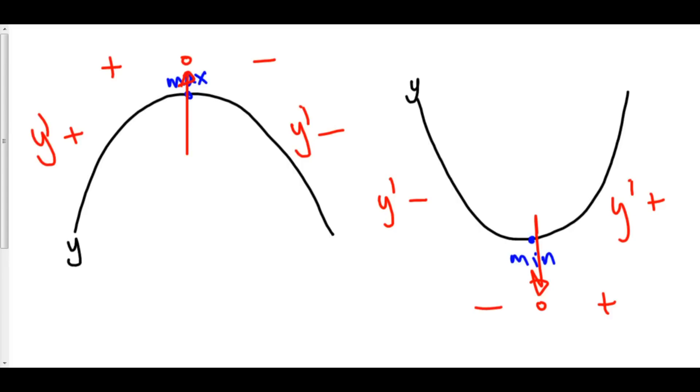Now, does the derivative have to be zero at an extrema? And the answer is no. Check this out. The derivative at this point doesn't exist. Here we have a cusp. However, this is still a max. The point does exist.